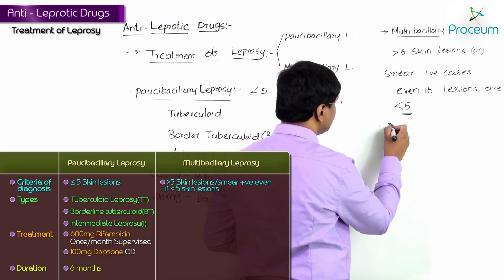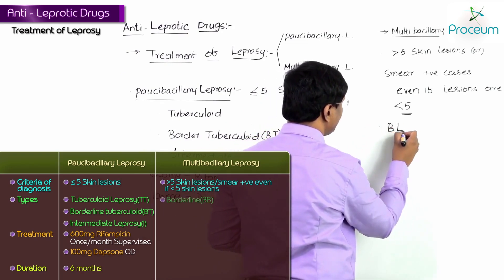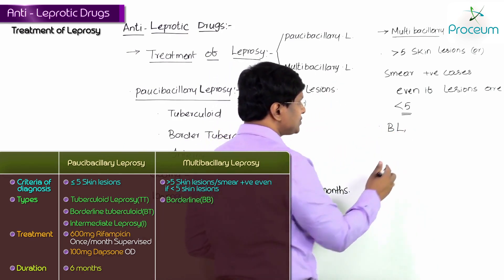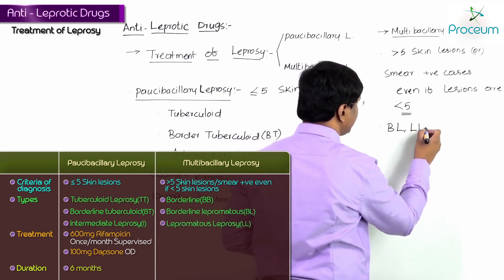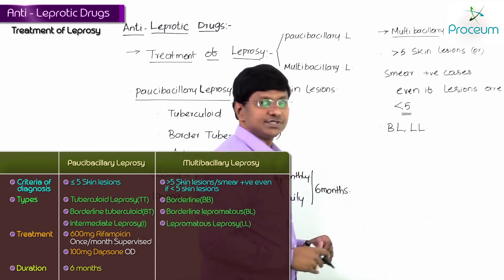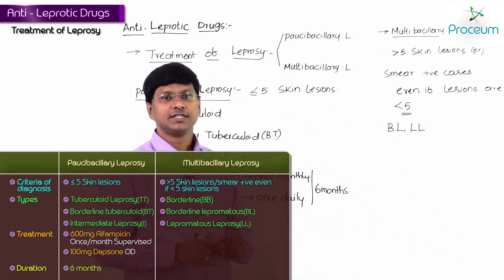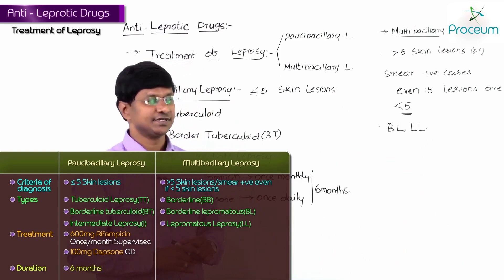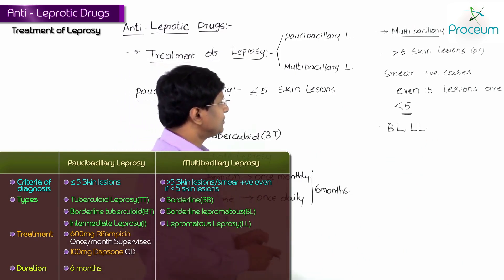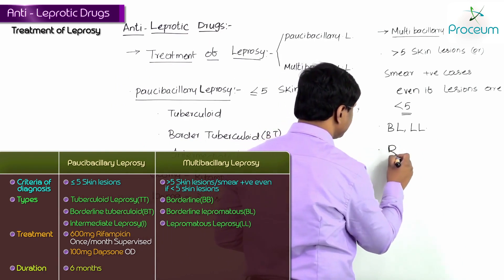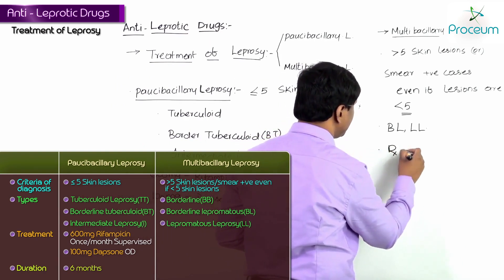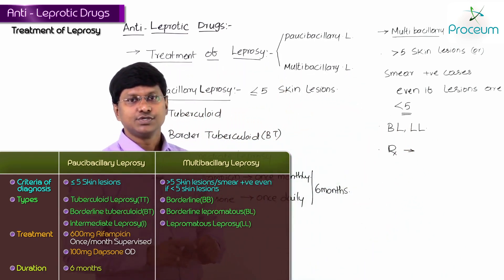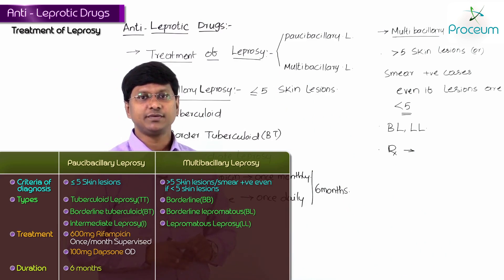Multibacillary leprosy includes borderline leprosy and lepromatous leprosy.